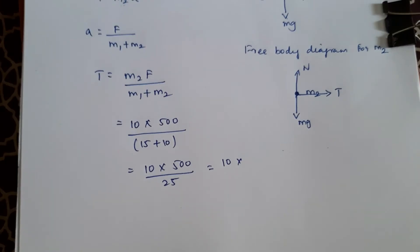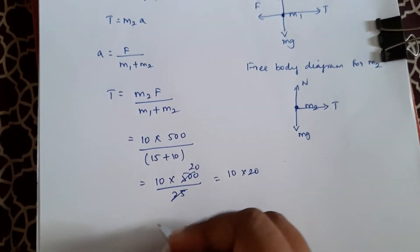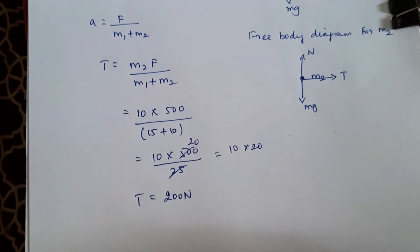10 times, if I cancel this, I'll get 20. So it is 10 times 20, which equals 200 newton. So the tension is 200 newton.